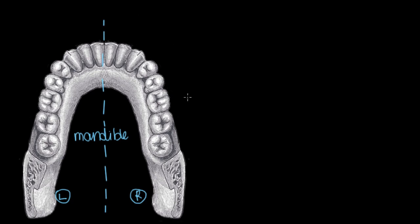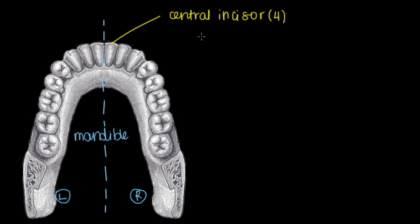Every tooth has a specific function. The first type we have is called the central incisor. We have four central incisors in total — one here, a second one here, and then two others in your upper jaw. The central incisor is mainly used for cutting; this is the tooth you use to cut your food. The way to remember that is the word 'incisor' — just like in surgery we say we're about to make an incision, meaning a cut. So central incisors make incisions.